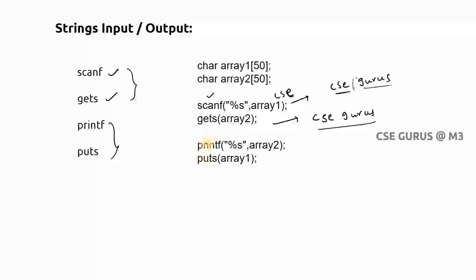In some compilers, gets won't work because of a security disadvantage — it accepts any number of characters even if that exceeds the allocated memory. To handle this, use fgets instead. With fgets you provide stdin as the input source, your variable name, and the maximum number of characters to accept — for example, 100. This limits the input to 100 characters and includes spaces, solving the memory constraint issue.